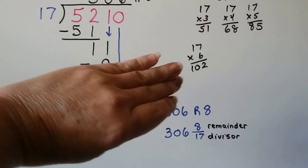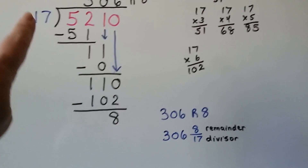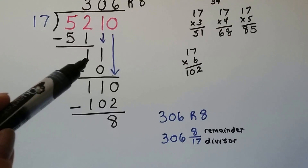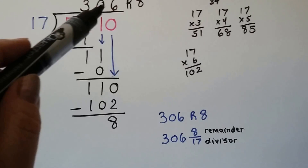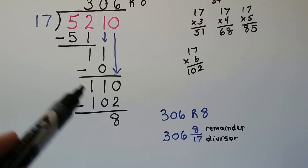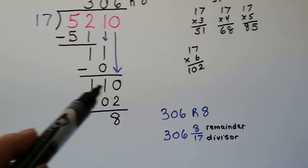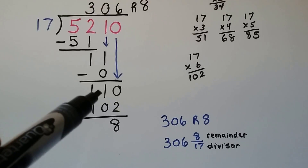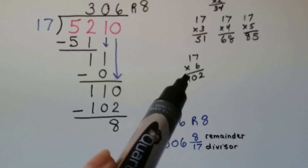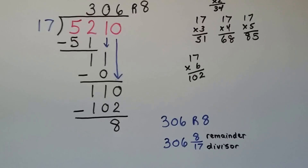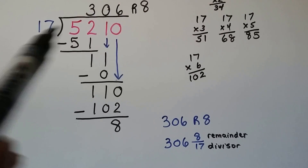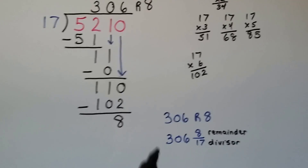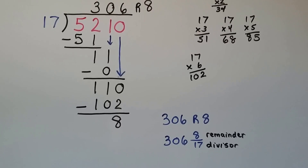We have 11. 17 can't fit into 11, so it goes in zero times. Put a zero up, 17 times zero is zero, subtract to get 11, then bring down the zero to make 110. How many times can 17 fit into 110? I know 17 times 6 is 102 — put a 6 up, multiply to get 102, subtract and we get 8 left over. So we have a remainder of 8, which can be written as a fraction.